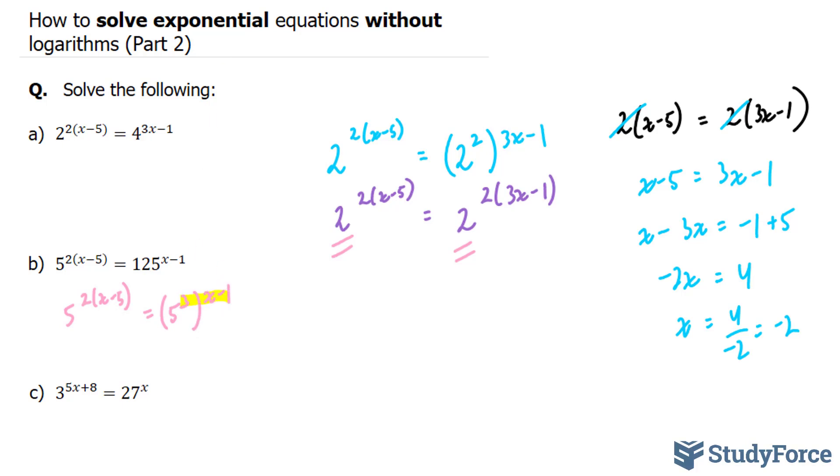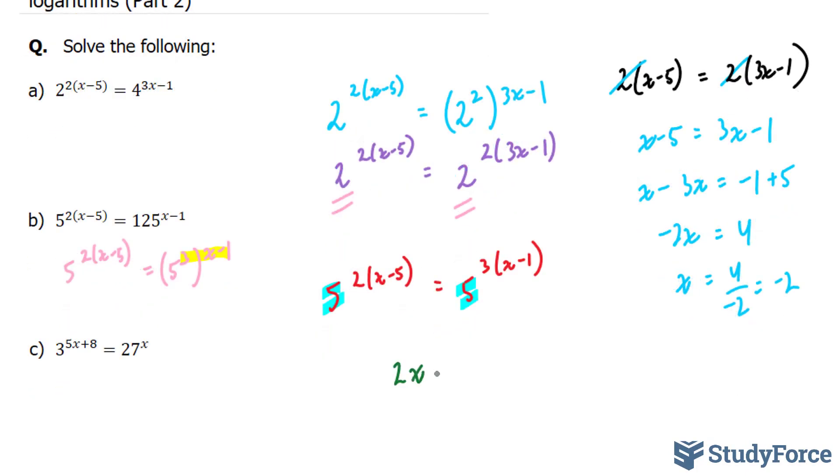We're going to write down the next step right here. 5 to the power of 2, x minus 5 is equal to 5 to the power of 3, x minus 1. Now, since the bases are the same, we can make the exponents equal to each other. So let's do that. 2, x minus 10, that's this part expanded, is equal to 3, x minus 3. This is a simple first degree equation.